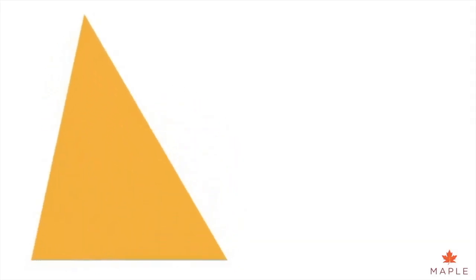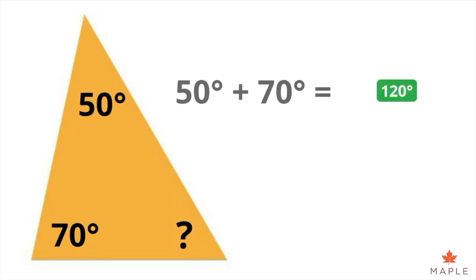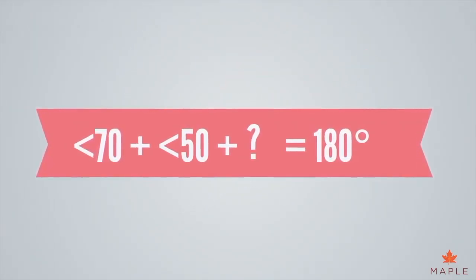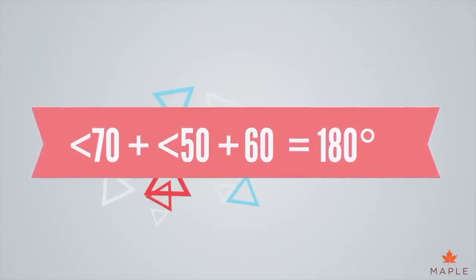So, for instance, if one angle is 70 degrees and the second angle is 50 degrees, there would be 120 degrees in total. If all the angles add up to 180 degrees, the missing angle is 60 degrees.